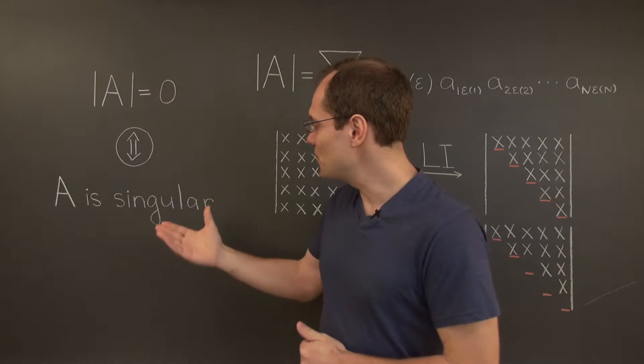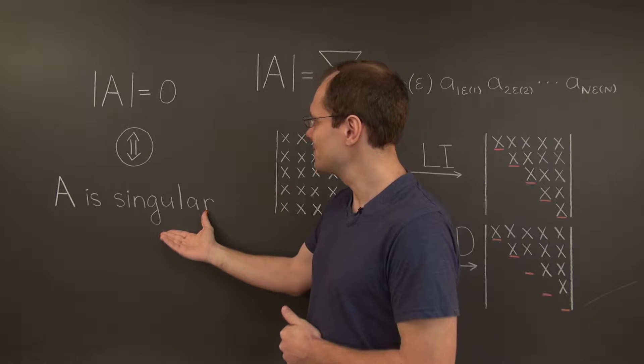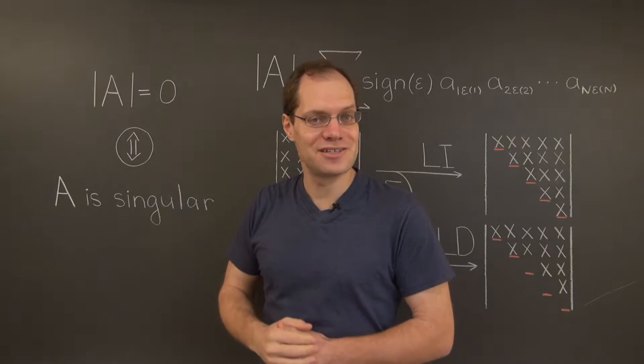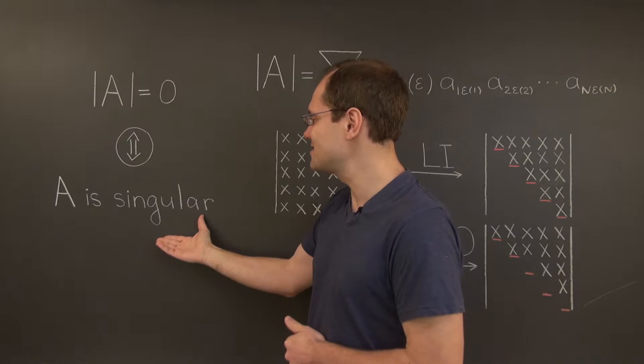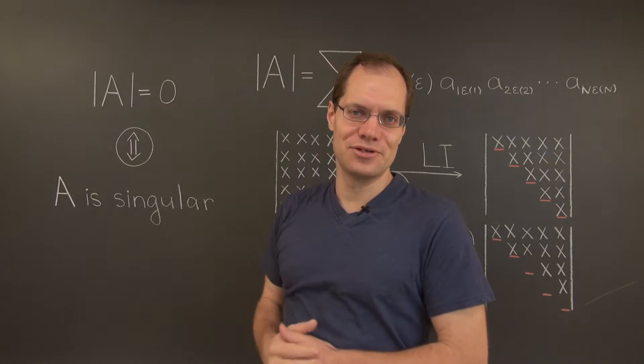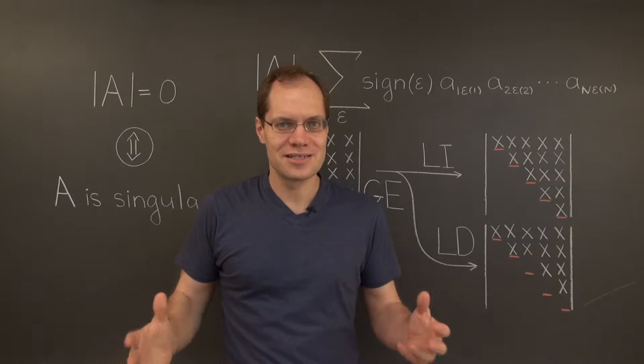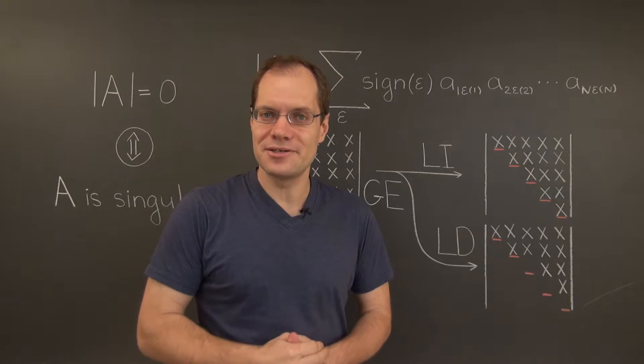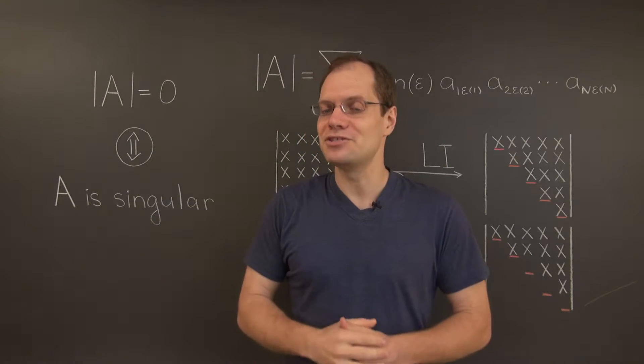Namely, when the matrix is singular, the determinant is necessarily zero. And conversely, when the matrix is non-singular, then the determinant is necessarily not zero. So the determinant does indeed give us an effective algebraic criterion for deciding whether a matrix is singular.